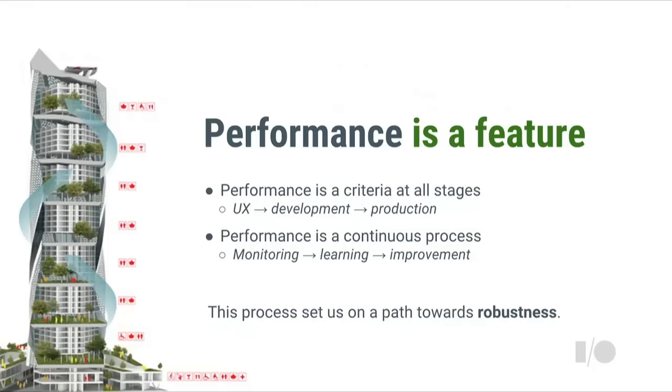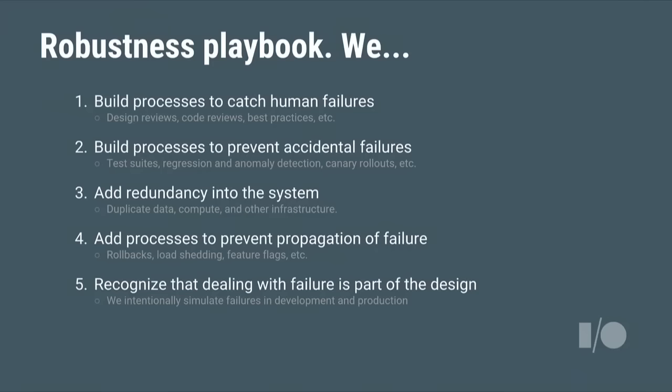That's where you get the second stage: performance is a feature. The team really understands this from beginning to end. If you're building an application for a market where users have limited connectivity or are sensitive to data usage, your UX designer — despite really wanting to put a pretty cover image at the top — knows they can't, because it'll hurt performance and the actual user experience. Developers understand they need to pay attention to performance, and when you release the app you have processes in place to monitor, detect regressions, and fix them — a learning cycle where you make changes, monitor, and adapt over time.